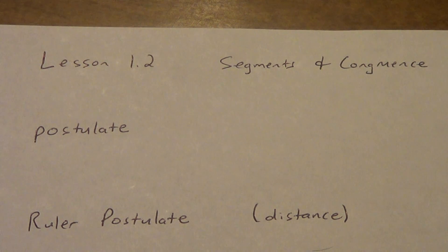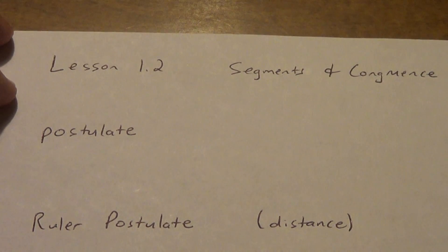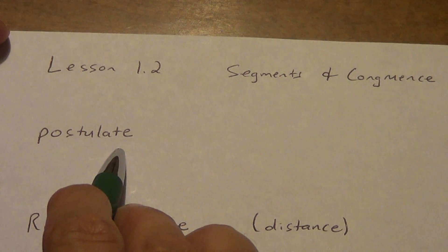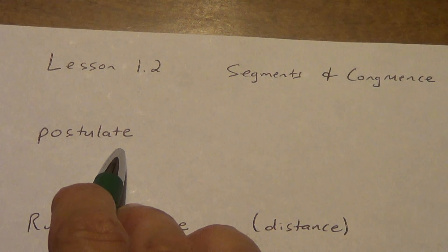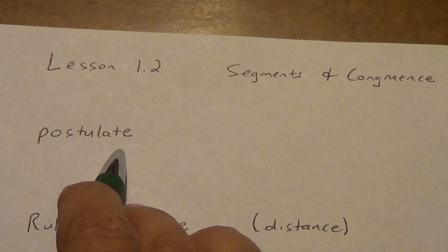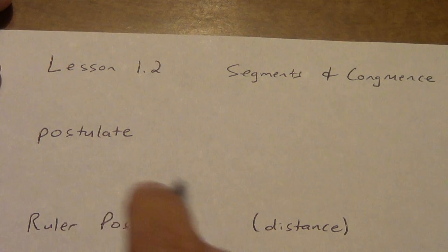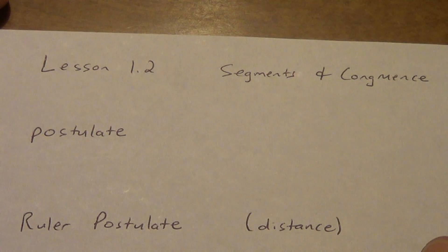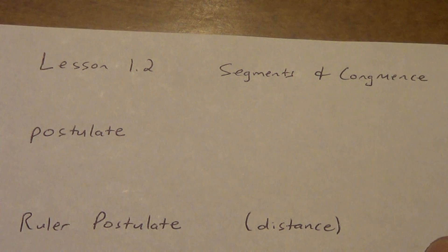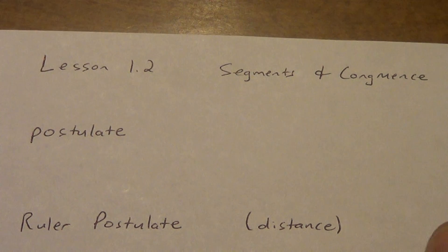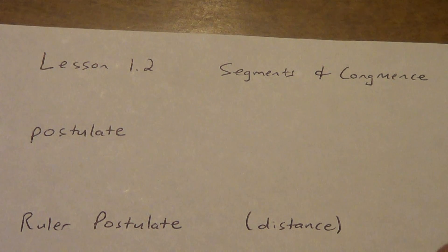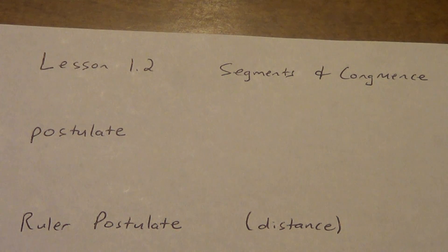What in the world is a postulate? A postulate is sometimes called an axiom as well, but we're just going to use the word postulate throughout our book. A postulate in geometry is a rule that is accepted without proving it. These postulates form the foundation of geometry.